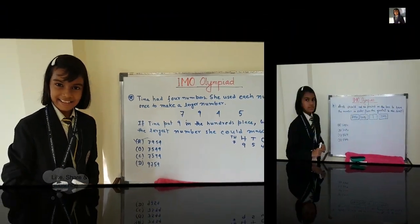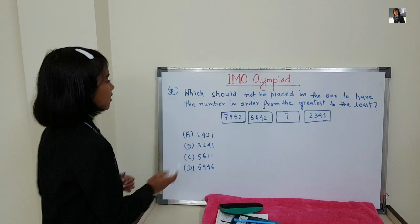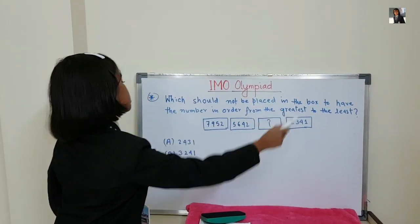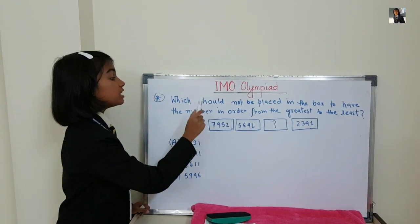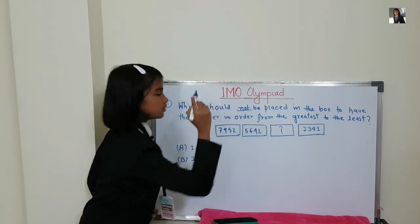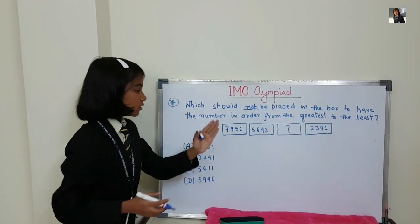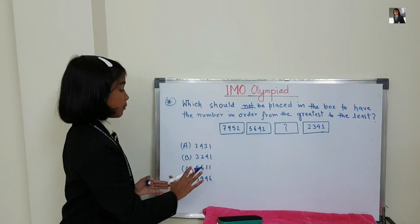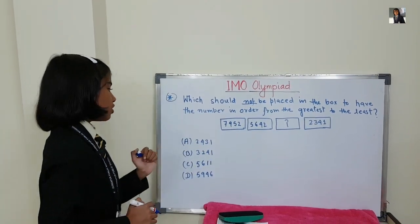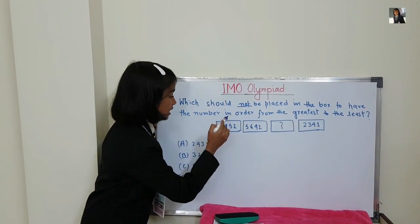Is it clear? Now let's move to this question. Which number should not be placed in the box to have the numbers in order from greatest to least — that is, in descending order. We have to find which number, if placed, will break the descending order.